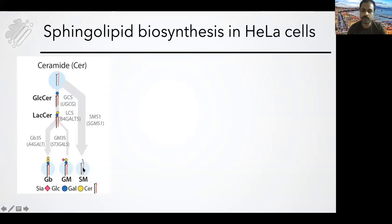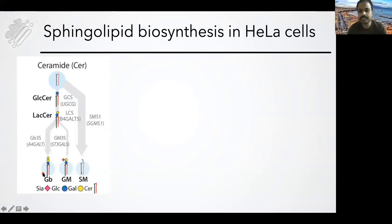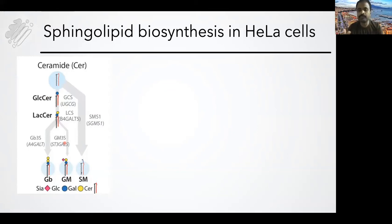So there are only three products of the system: sphingomyelin, gangliosides, and globosides. We started first looking at where the enzymes that make these — there are about only five or six enzymes — are localized in the Golgi apparatus.